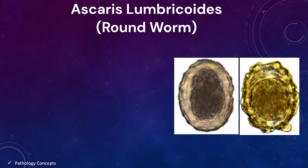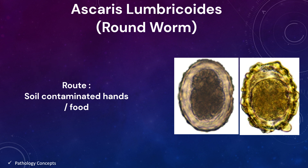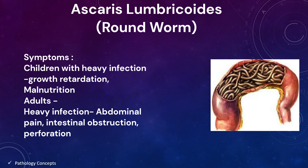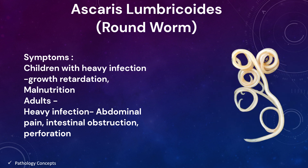Ascaris lumbricoides is the roundworm. The phylum is Nematoda, genus is Ascaris. The route of infection is through soil-contaminated hands or food. Symptoms include growth retardation and malnutrition in children with heavy infections. In adults, worms usually cause no acute symptoms, but high worm burdens may cause abdominal pain, intestinal obstruction, and potentially perforation. Migrating adult worms may cause symptomatic occlusion of the biliary tract, appendicitis, and nasopharyngeal expulsion.